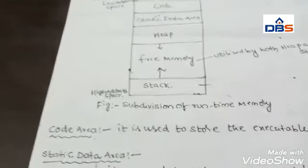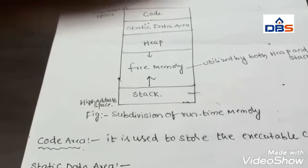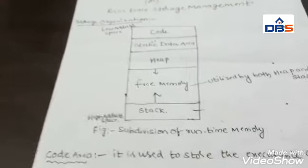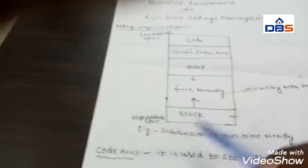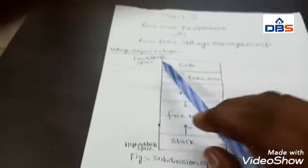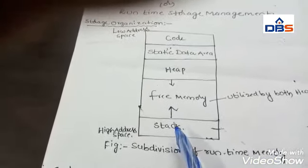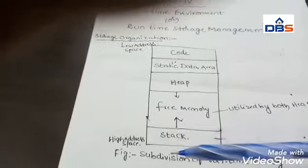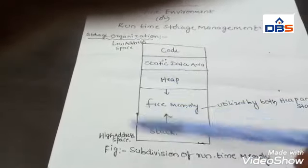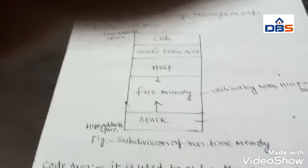We have two more areas — heap and stack — which are mainly used to utilize space in an efficient manner. The stack grows from high address space to low address space, whereas the heap grows from low address space to high address space. These two growth directions are opposite to each other.